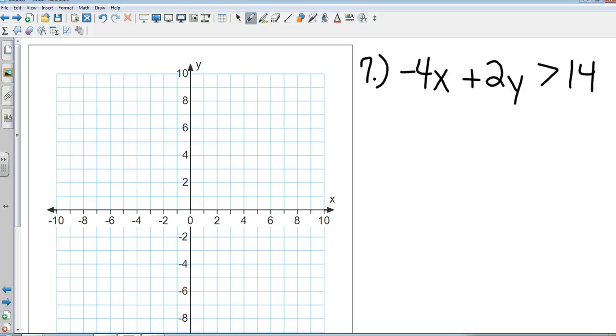Question number 7. Negative 4x plus 2y is greater than 14. What's the first thing you notice when you see this equation? It's in standard form. So your first job is to put it in slope-intercept form. So do that first and then graph it. Okay. First step. Anybody? Anyone? Just say it. Add 4x to both sides.